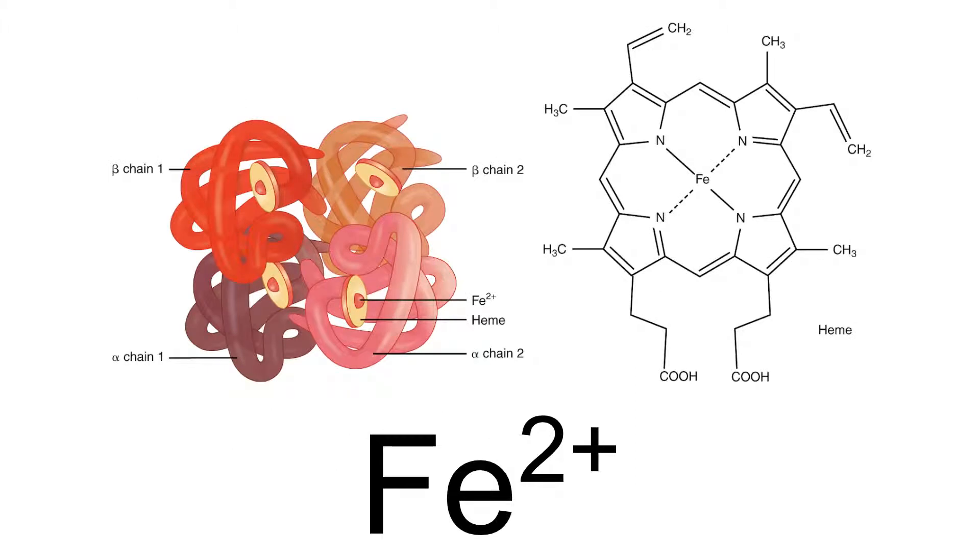Finally, the last ion highlighted here is the iron ion. This is an iron atom which has lost two electrons, so it has a plus two charge. Iron ions are found within molecules of hemoglobin, and hemoglobin is found within red blood cells and is responsible for transporting oxygen around an animal.